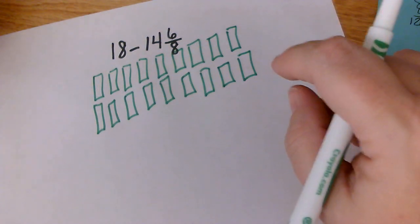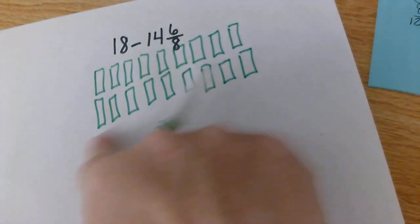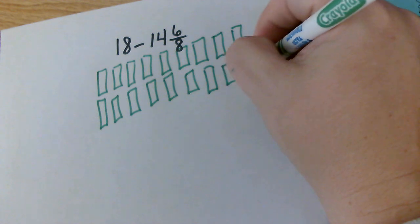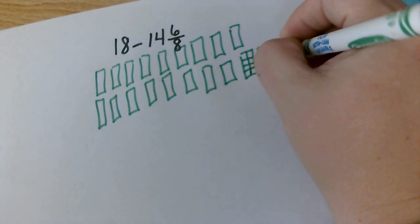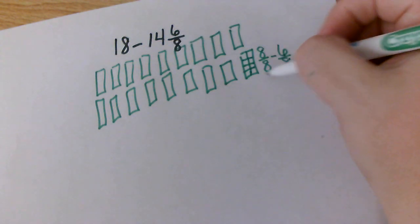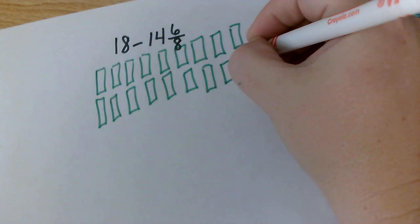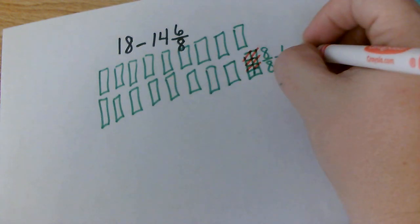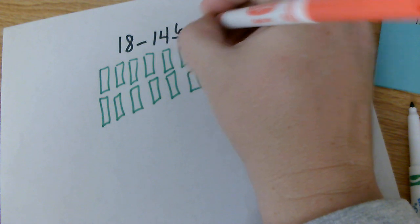Step 2 — remember — is to subtract my fraction. I'm going to subtract 6 eighths. But are any of these broken up into eighths? No, they're all whole numbers. So I need to take one of these and break it up into eighths — 8 pieces. Now this is broken up into eighths. I need to subtract 6 eighths, because this is saying 8 eighths minus 6 eighths. I took that whole and broke it into 8 eighths. Now I'm going to subtract 6 eighths — cross off 1, 2, 3, 4, 5, 6. How many do I have left? I only have 2 eighths left. So my fraction part is going to be 2 eighths.